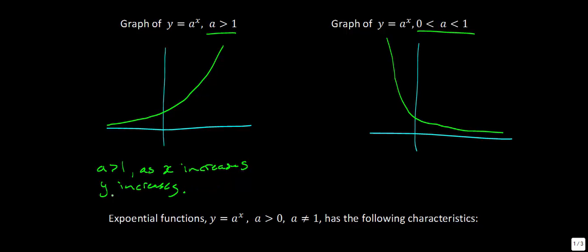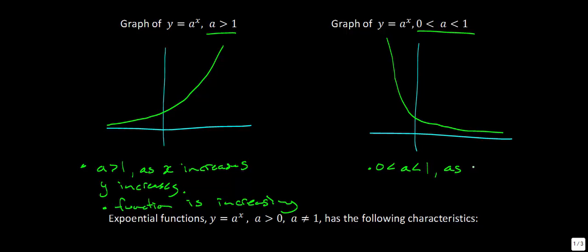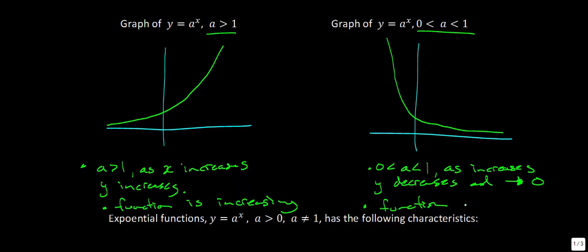We'd say the function is increasing. Exponential growth — we shouldn't be too surprised that it's increasing. On the other side, when a is between 0 and 1, as x increases, y decreases. It's actually approaching 0, so we say the function is decreasing. In general, that will happen for every one of these exponential functions.